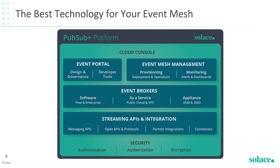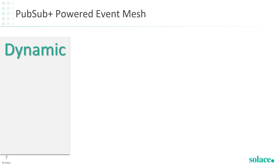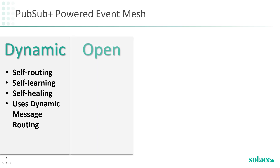When building an event mesh, it makes sense to use the best technology for the job. Solace enables an event mesh with PubSub Plus Platform, a complete event streaming and management platform that provides all the tools you need to design, deploy, and manage event-driven architectures and stream events through your entire ecosystem. The benefits of a Solace-powered event mesh are that it is dynamic, open, simple, and everywhere. It's dynamic in that an event mesh built with Solace PubSub Plus event brokers is self-routing, self-learning, and self-healing, so it can automatically and efficiently transmit events between producer and consumer applications wherever they run.